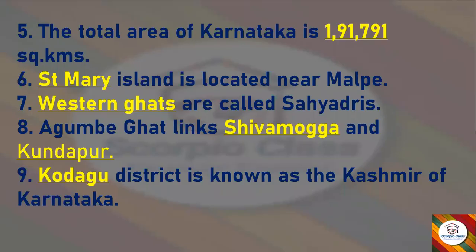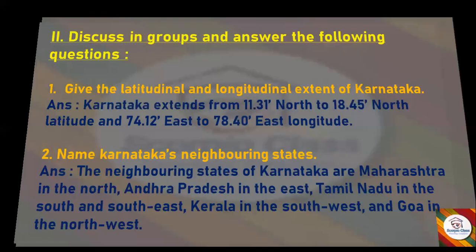Fifth question: The total area of Karnataka is 1,91,791 square kilometers. Next: Saint Mary Island is located near Malpe. Next: Western Ghats are called Sahyadris. Agumbi Ghat links Shivamogga and Udupi. Kodagu is known as the Kashmir of Karnataka.